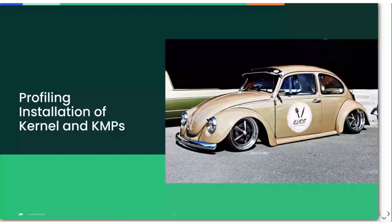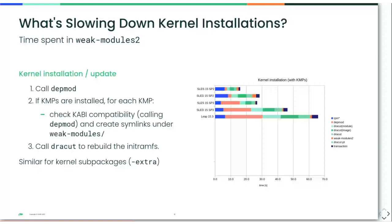Coming back to the slow kernel installation: what is slowing it down? The first answer is that most of the time is spent in a tool called weak-modules2, which is responsible for everything related to kernel module installation. The bar chart here shows the time for kernel installation — less is better — split up between different parts. The blue part on the left is the time RPM needs to copy files from the package to the file system; the rest is almost completely spent in weak-modules2 calling other processes.